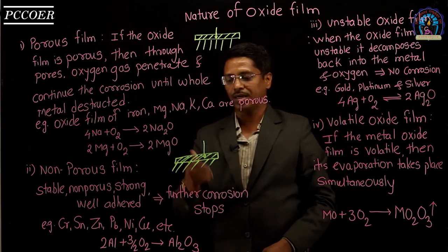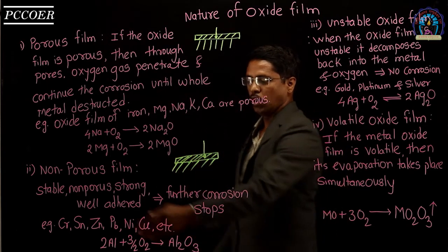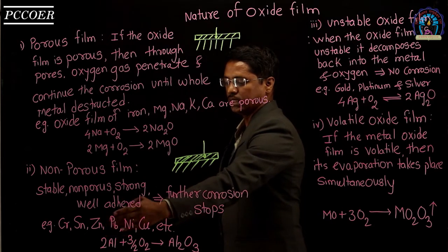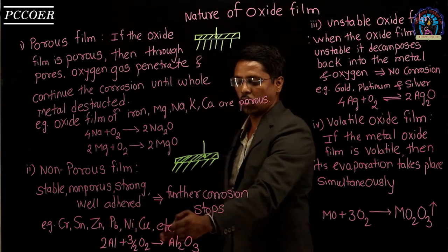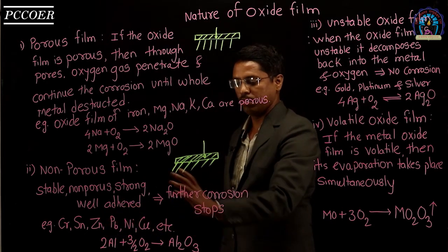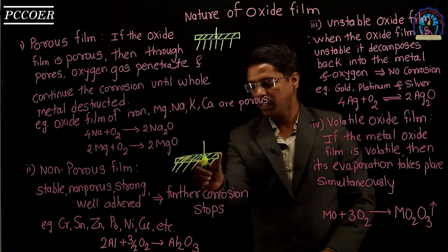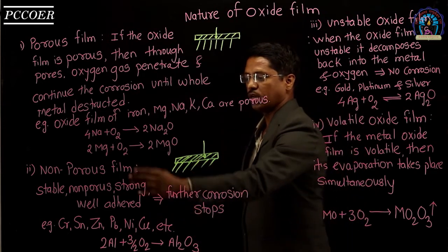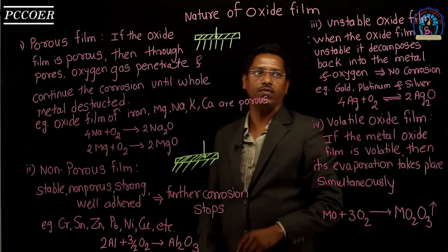Which metals generally form a non-porous oxide film? Chromium, tin, zinc, lead, nickel, copper, and many more typically form non-porous oxide films. These metals are protected from further corrosion due to the stable, well-adhered oxide layer.